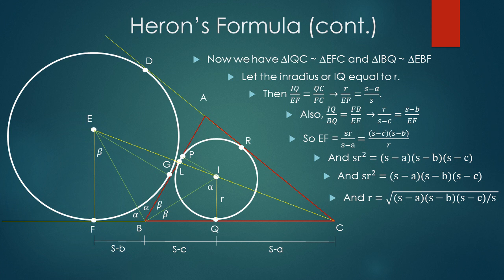Now, multiplying s minus a on both sides and r on both sides, we have sr squared equals s minus a times s minus b times s minus c. Is it looking familiar yet? Solving for r, we get r equals the square root of s minus a times s minus b times s minus c over s.